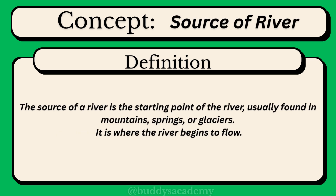Source of a River: The source of a river is the starting point of the river. It is usually found in mountains, springs or glaciers. It is where the river begins to flow.